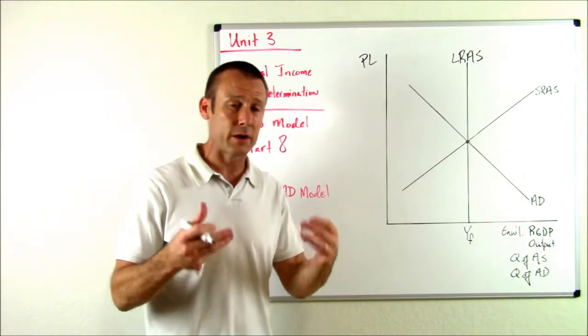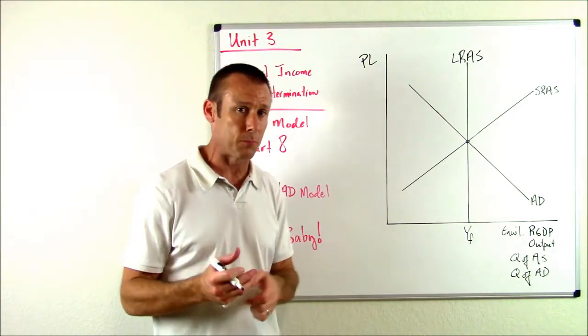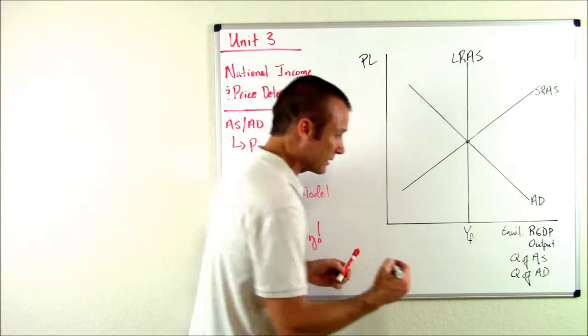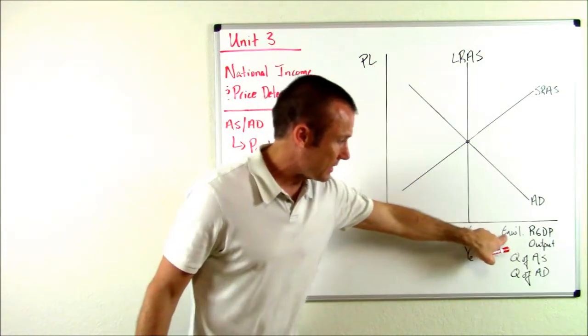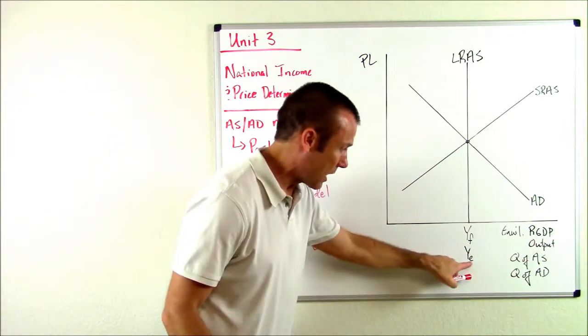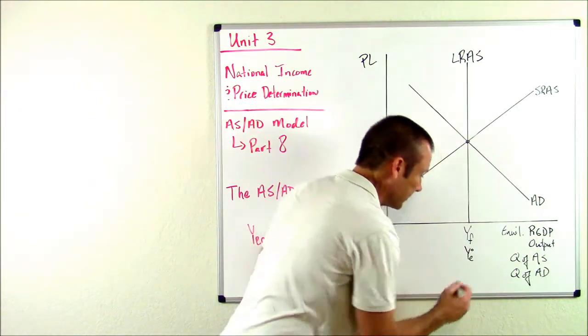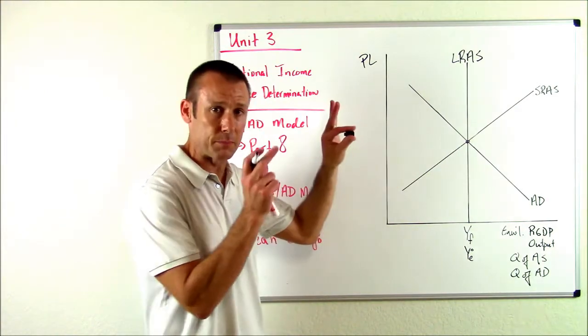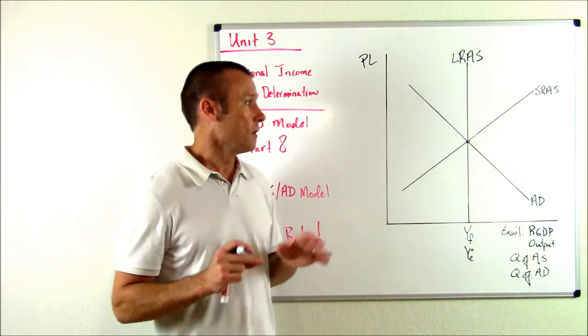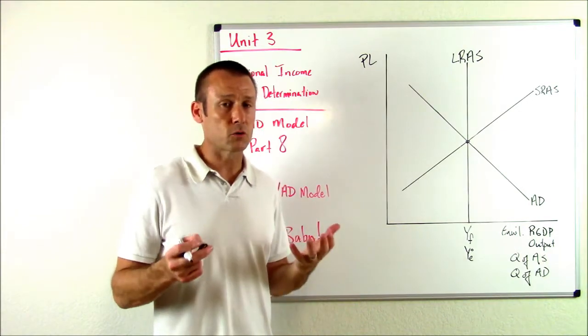Now this particular graph I drew, I've got the intersection point of the SRAS and the AD on the LRAS, which means that right now we are producing our full employment level of output. Technically speaking, we could say that right now YE, my equilibrium real GDP YE sub zero, is also equal to YF right now in this economy pictured on this graph.